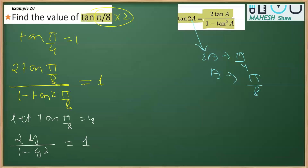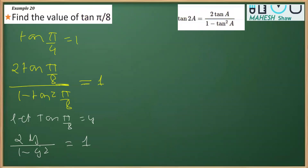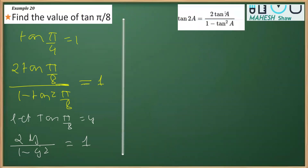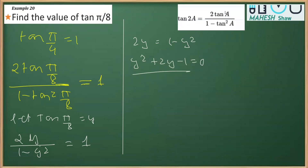The right-hand side is 1. Doing cross multiplication, we get 2y = 1 − y². Writing this in the standard form of a quadratic equation gives y² + 2y − 1 = 0. This cannot be factorized, so we will use the quadratic formula to find y.